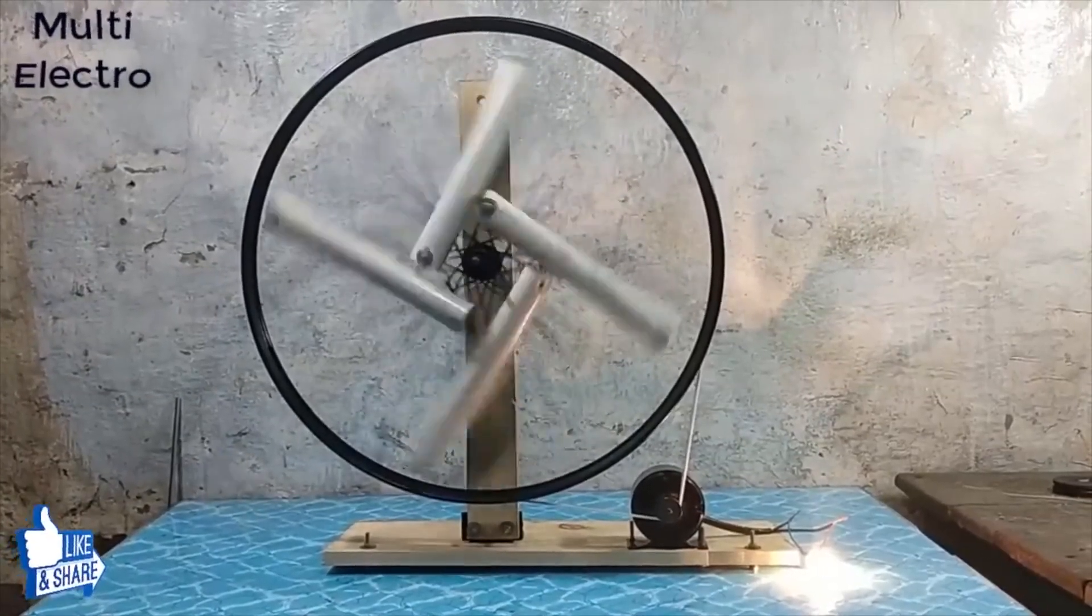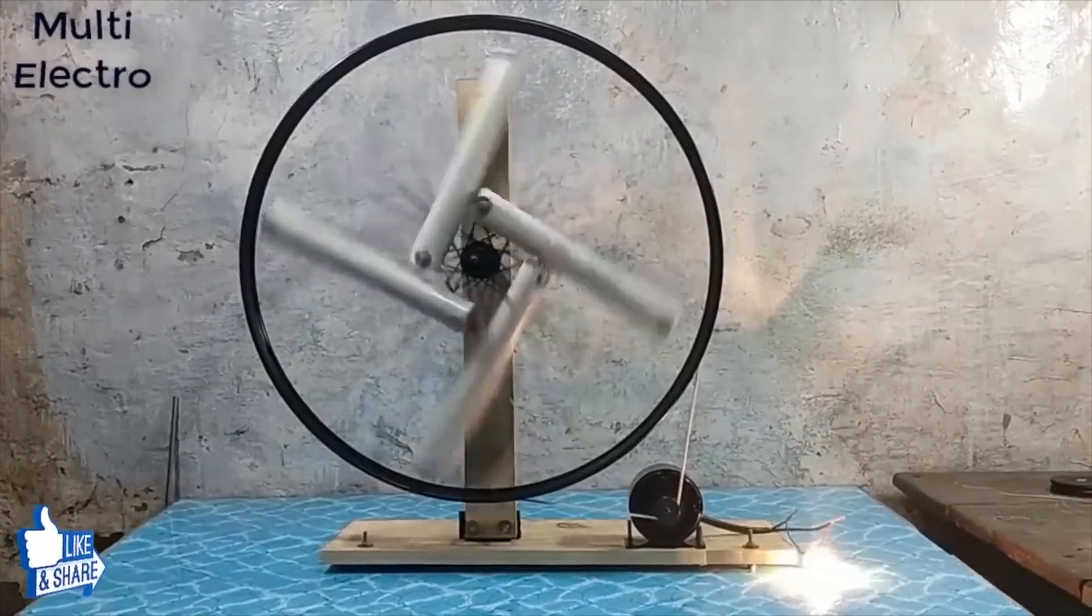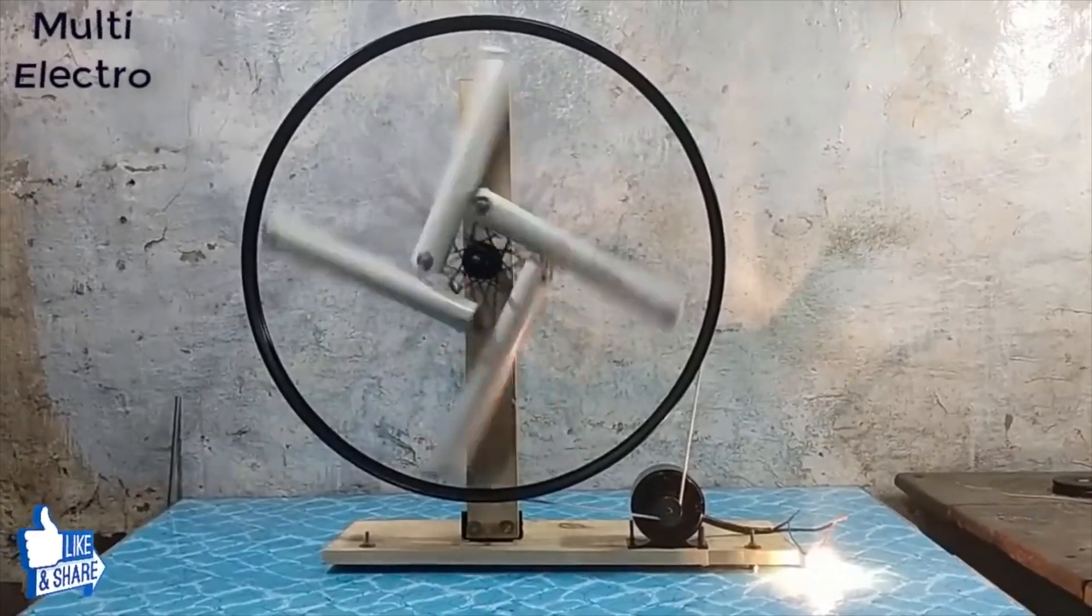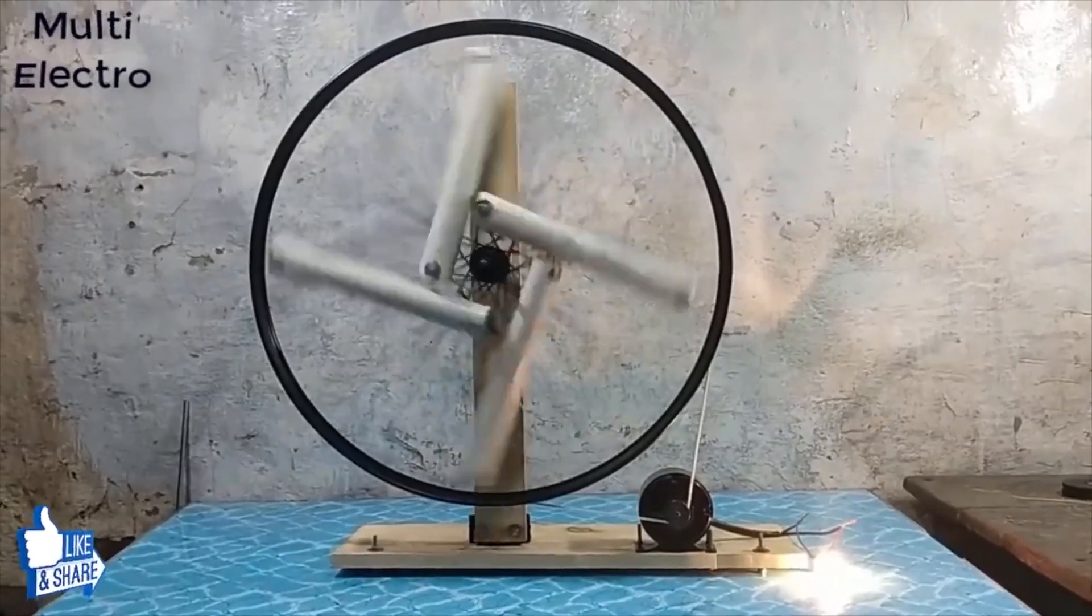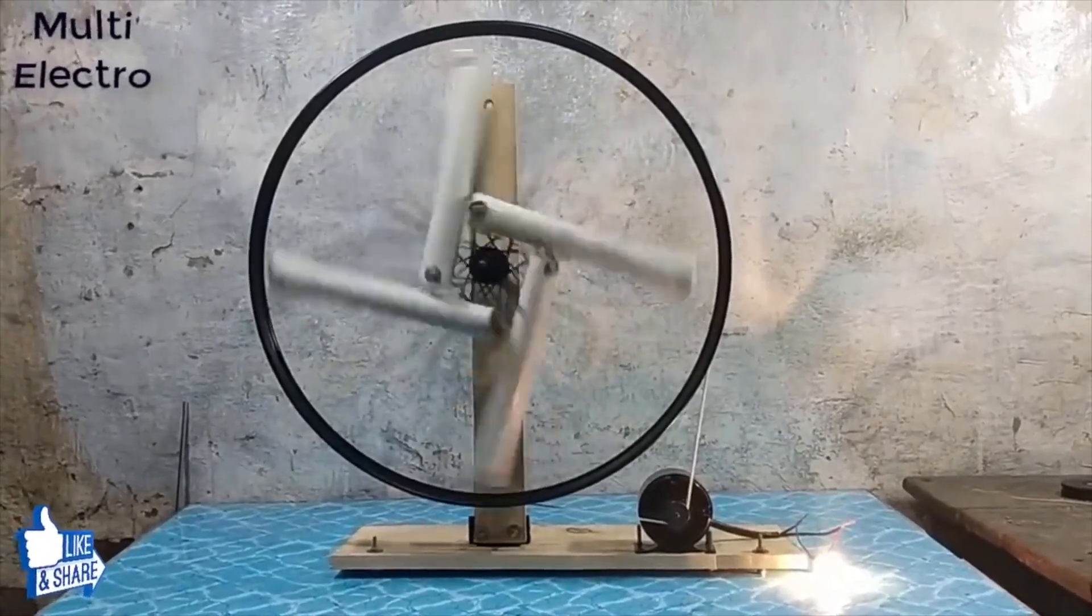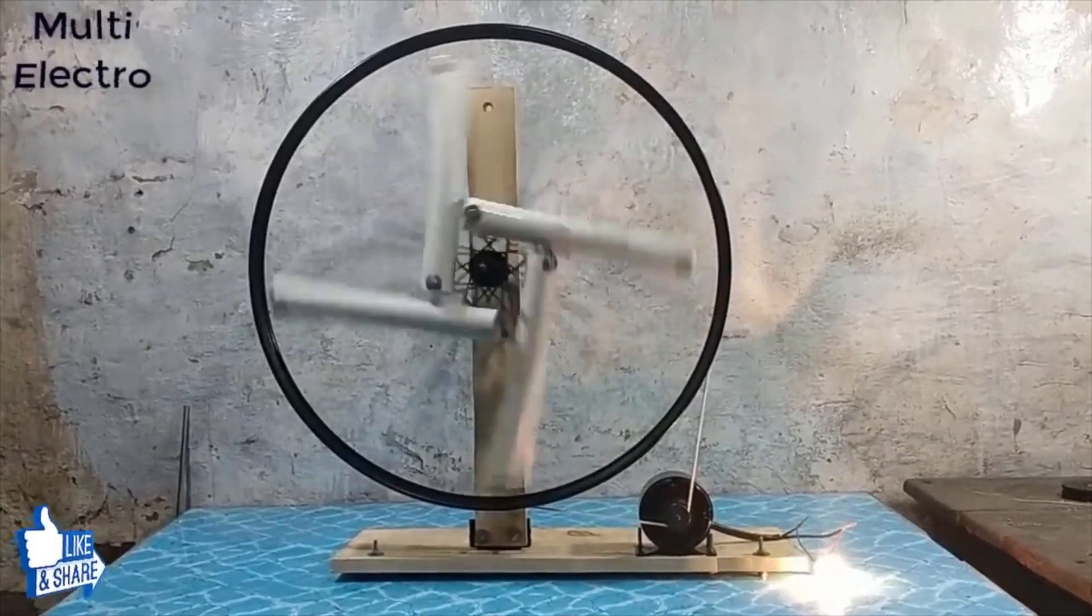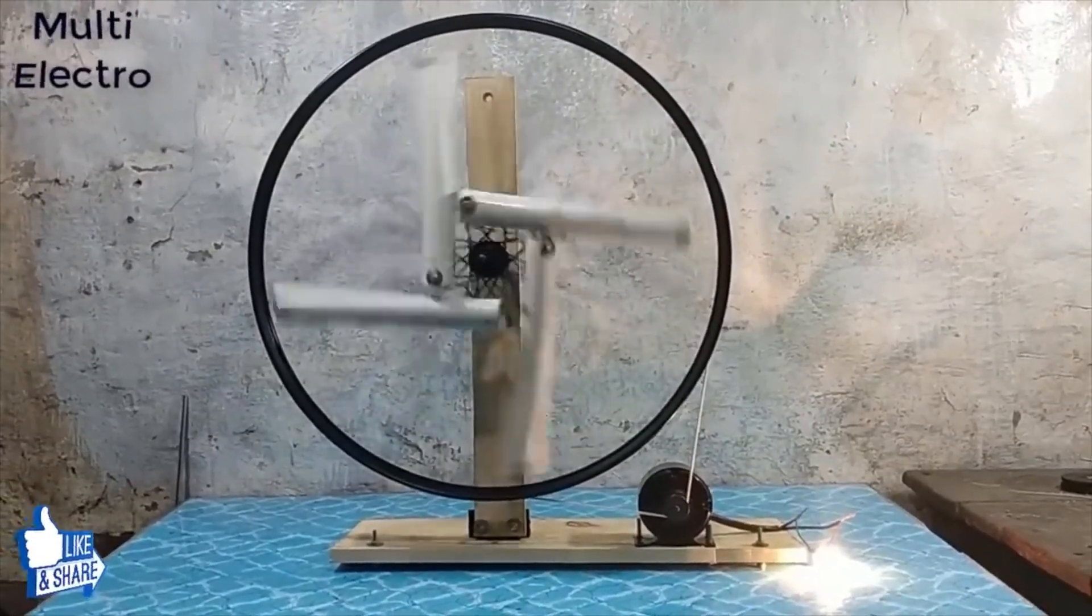Again, this video places music over the background noise to cover up an air hose or cheat device. This YouTuber is supposedly using a gravity wheel to turn an electric motor and power a small light bulb. I think it goes without saying that this is a fake.